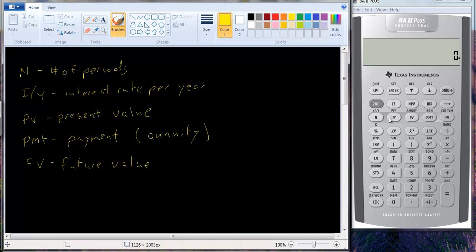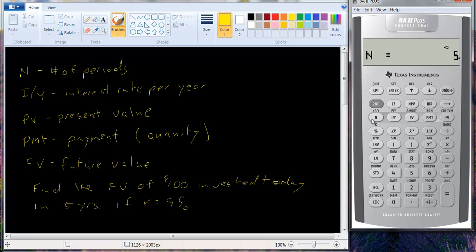And if you punch in these, if you give it a couple of variables, you're able to solve for the other one with this CPT key. Let's just look at a couple of simple problems. Let's find the future value of $100 invested today in five years if the interest rate is 9%. So how do we do that? Well, we know that N is equal to 5. So we hit 5 and then the N key, and you see an equal sign. It means it's registered. We have the interest rate.